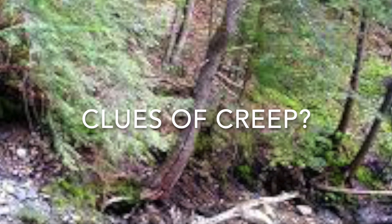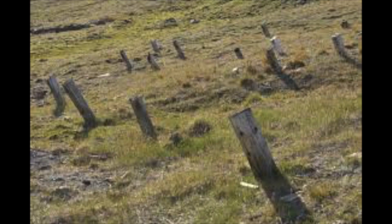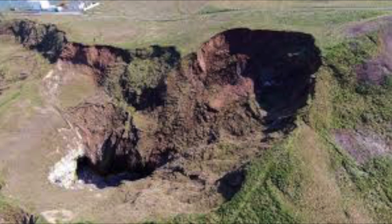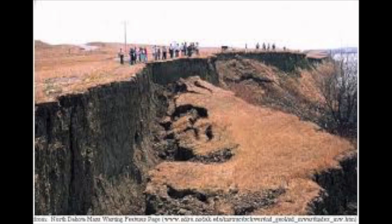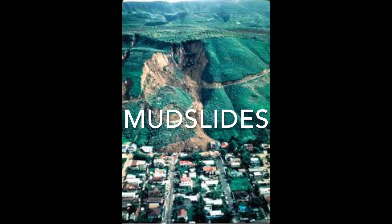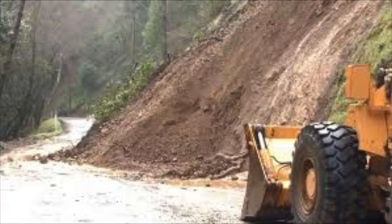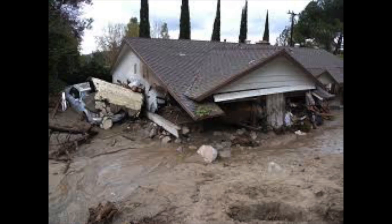Clues of soil creep include bent tree trunks and tilted fences. The second type of mass movement is slumping, with a clue being scars on the landscape. The third type is mudslides, occurring on steep slopes. Mudslides are most likely to occur after rain has saturated the soil. Mudslides move quickly and may cover homes and villages.